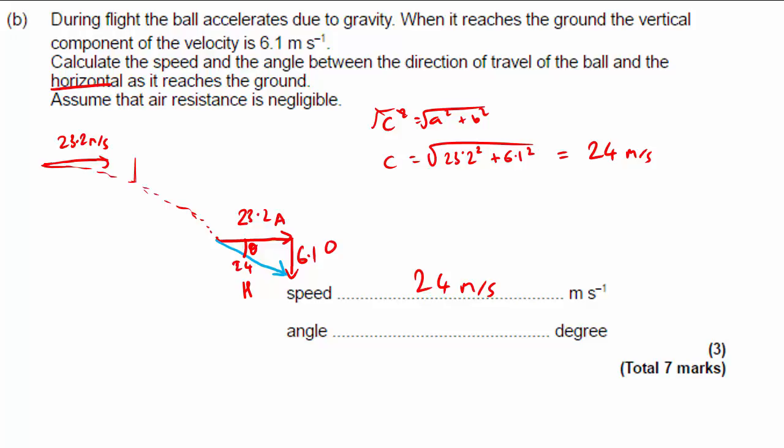Now I want to use the values they've given me, the 6.1. I don't want to use the one I just calculated, although I did calculate this. I know this one's correct from the previous part of the question because it was part of the show that question. I'll use these two values to calculate the angle. I'm using opposite and adjacent, however you do your trigonometry, SOHCAHTOA.